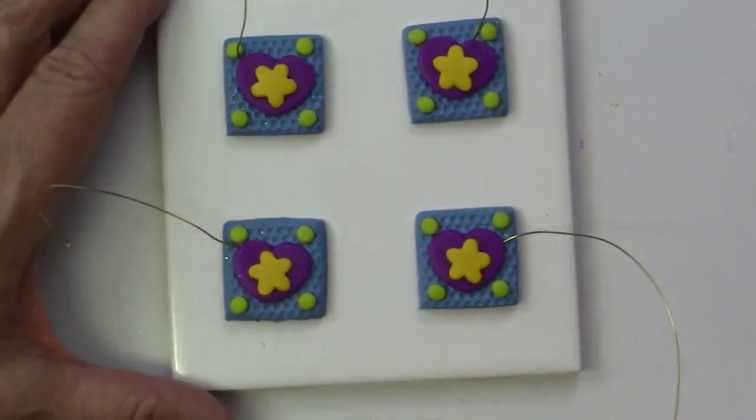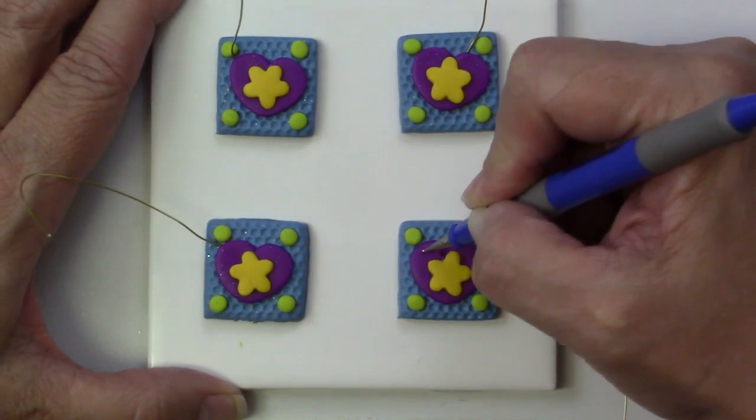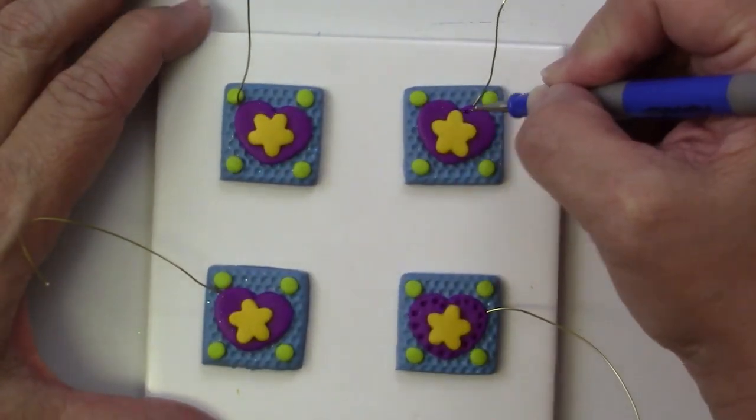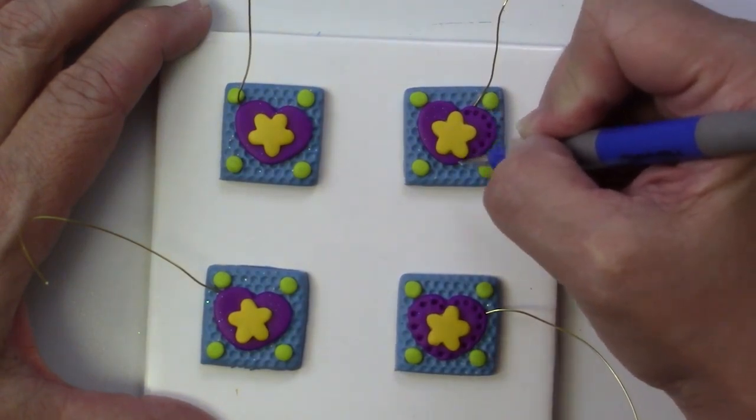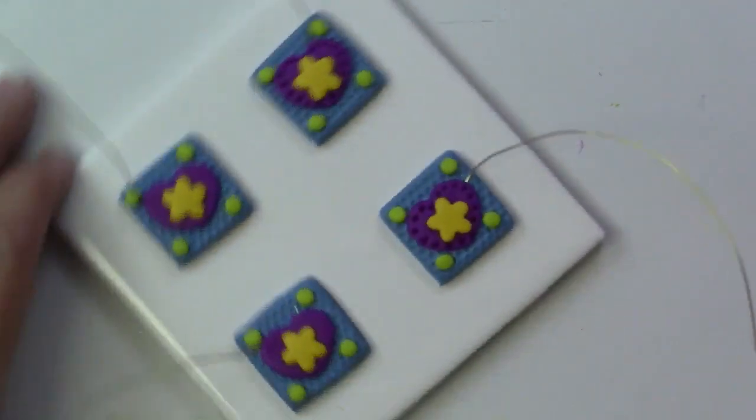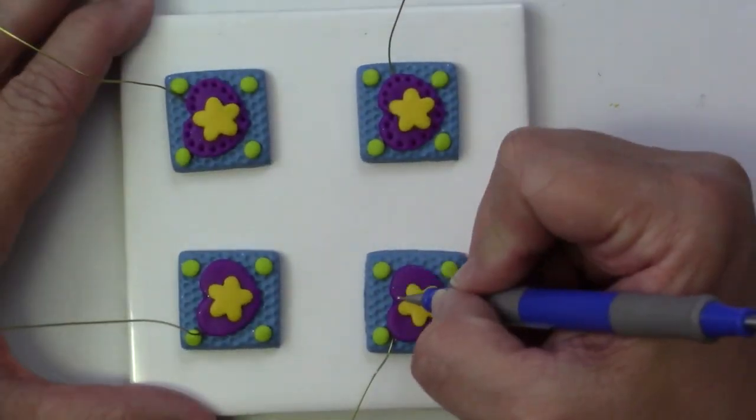And then I've got a small embossing tool and I'm just adding a little extra texture by placing holes or embedding the embossing tool around the heart shape to give it a little bit of definition and a little bit of depth and texture.